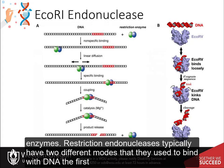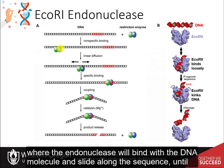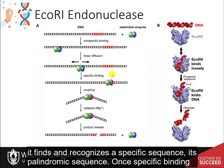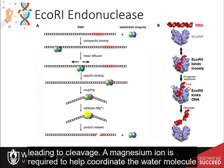Restriction endonucleases typically have two different modes that they use to bind with DNA. The first binding mode is a nonspecific scanning mode, where the endonuclease will bind with the DNA molecule and slide along the sequence until it finds and recognizes its specific palindromic sequence. Once specific binding occurs, the strain distortion then becomes apparent and the DNA is significantly bent, leading to cleavage.